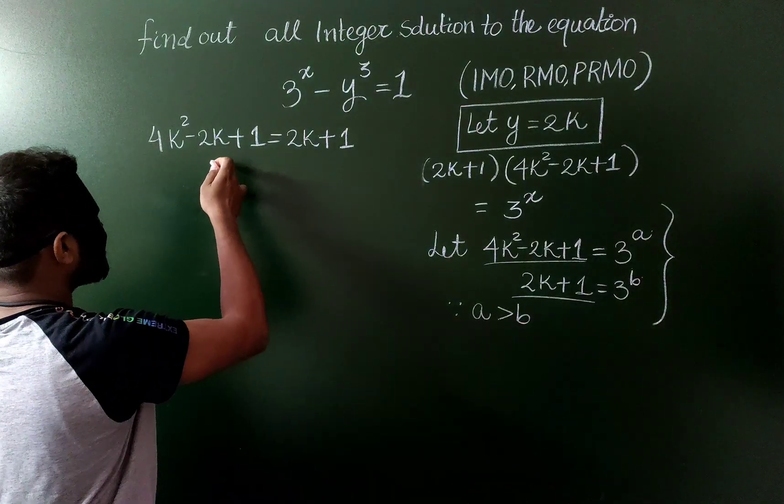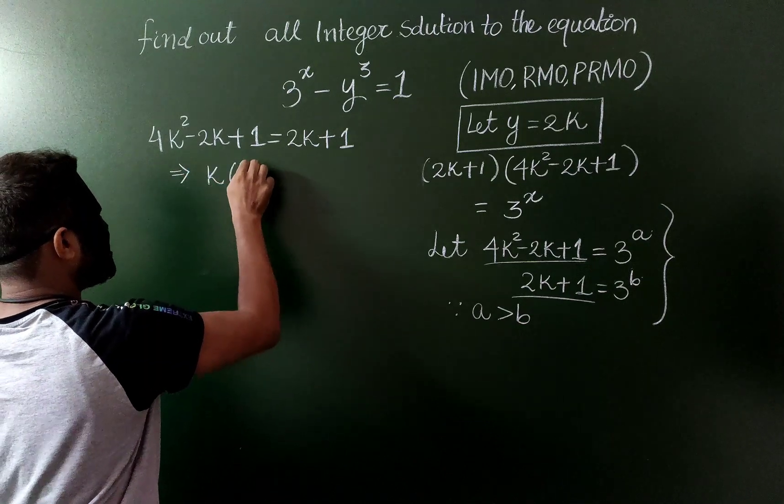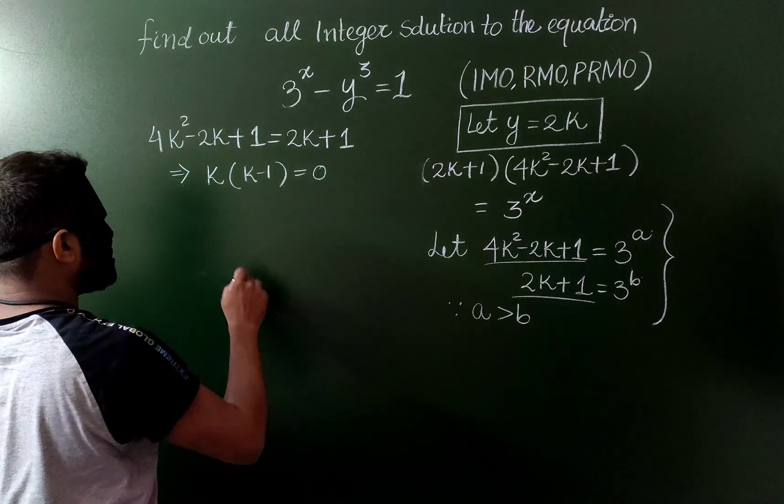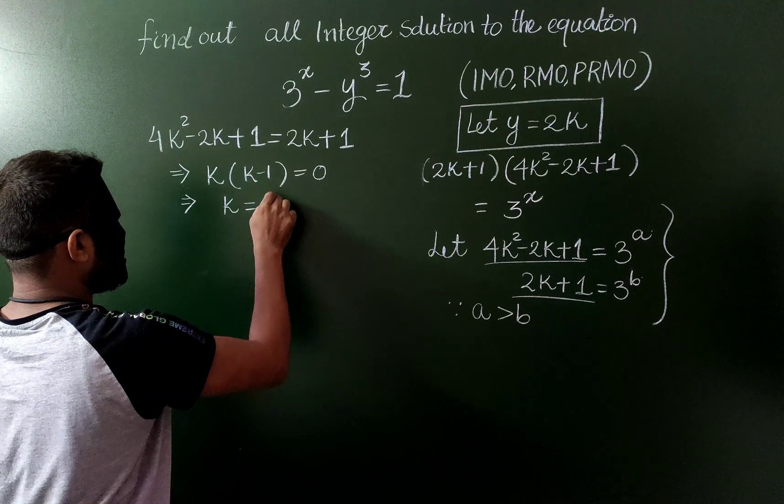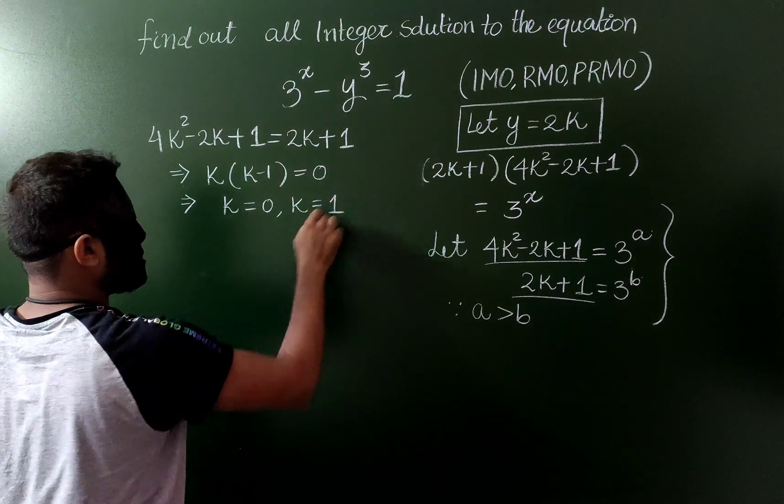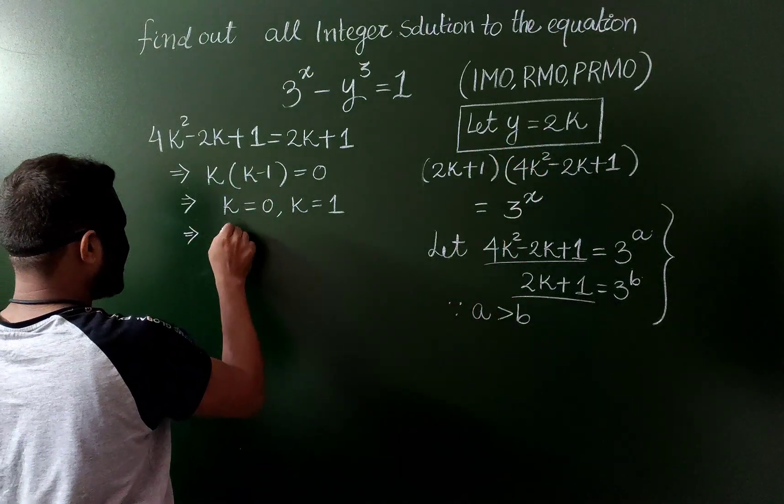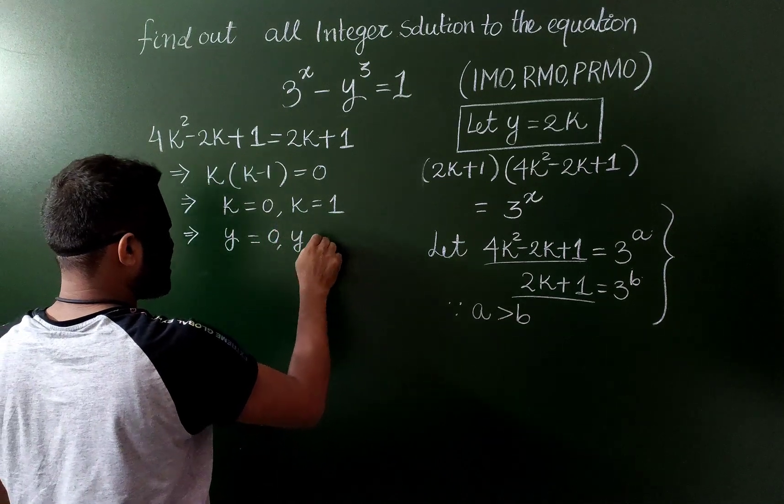Now solving this gives me k into k minus 1 is equal to 0, therefore k is equal to 0 or k is equal to 1. Now we know because y is equal to 2k, and it gives me the value of y as well: 0 or y is equal to 2.